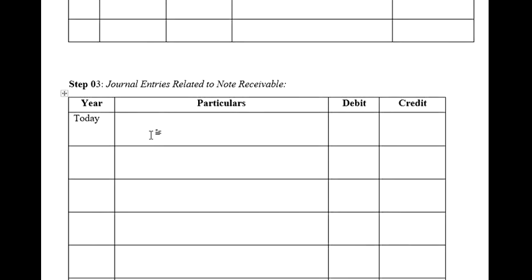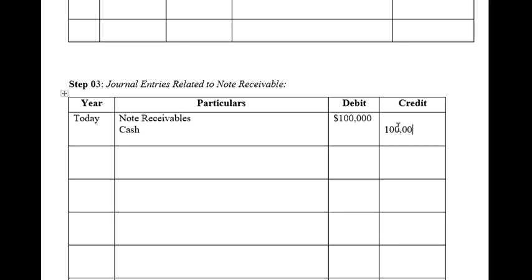Step three covers the journal entries. Today we received a note receivable from Bio Foods. Since note receivable is an asset and we are receiving it, we debit note receivable — an increase in asset is a debit. We debit note receivable for $100,000. We are receiving this because we paid cash, so we credit cash for $100,000. This is the journal entry made at inception.